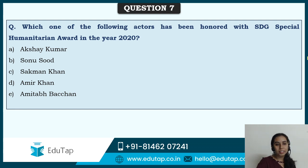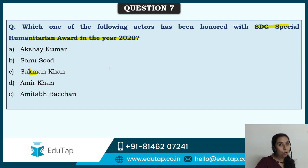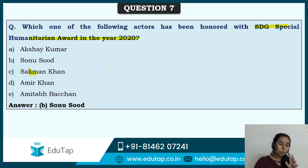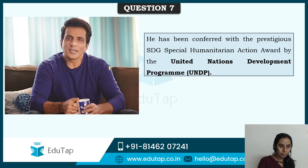The SDG Special Humanitarian Award for 2020 went to Sonu Sood. This Bollywood personality was widely recognized for helping migrants during the COVID pandemic and was called the messiah of migrants. This award is the Humanitarian Award for Sustainable Development Goals and it has been given to Sonu Sood by the United Nations Development Programme — UNDP is the body associated with SDGs.